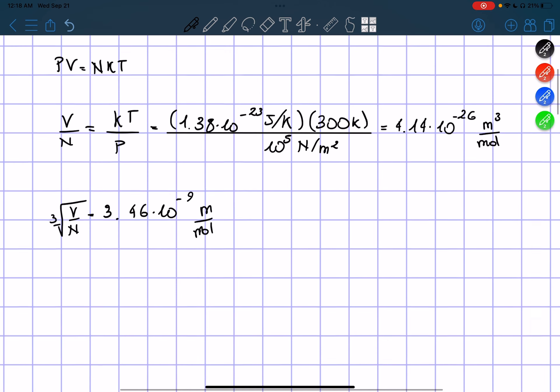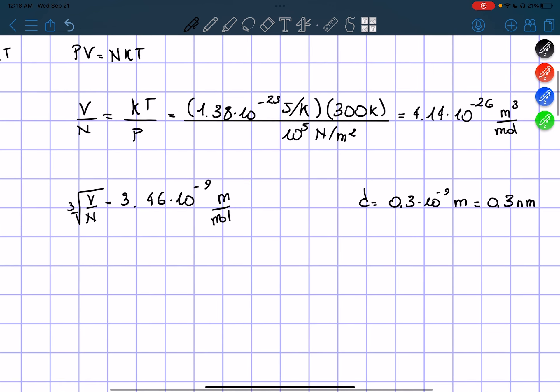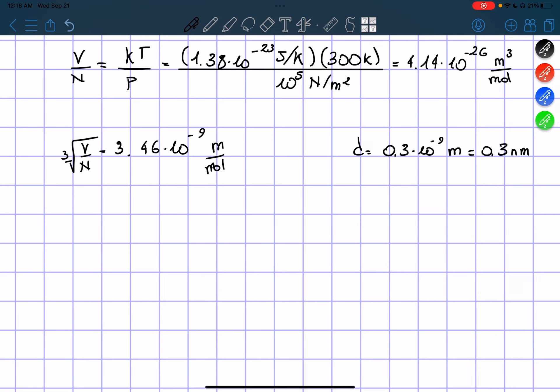And I'm just going to say that the diameter of a molecule is equal to 0.3 times 10 to the power of negative 9 meters or 0.3 nanometers. So I can find that the ratio between the volume that they occupy, the volume over the diameter, is equal to 3.46 nanometers over 0.3 nanometers. So it's approximately 11 times.